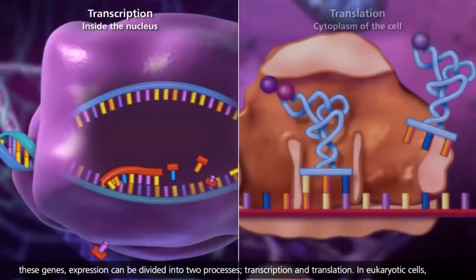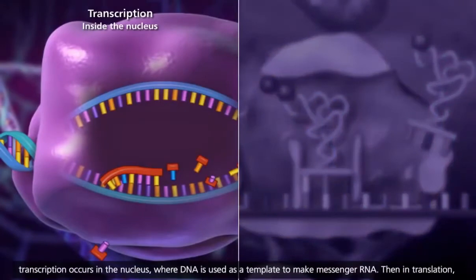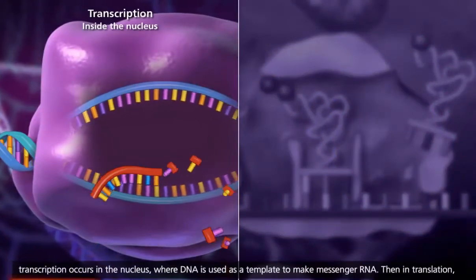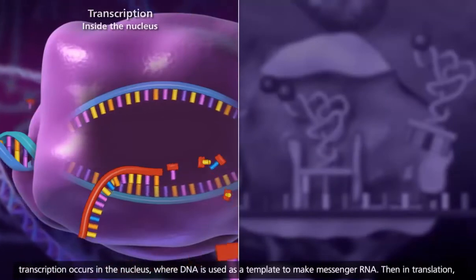transcription and translation. In eukaryotic cells, transcription occurs in the nucleus, where DNA is used as a template to make messenger RNA.